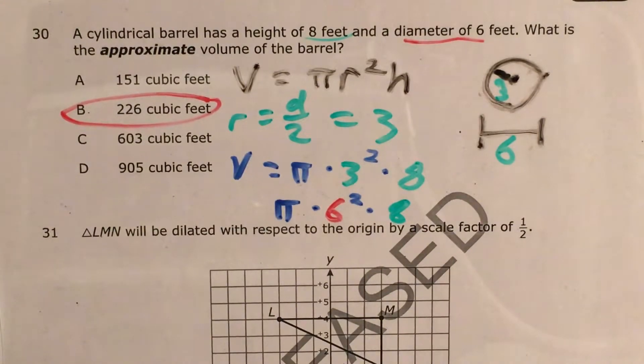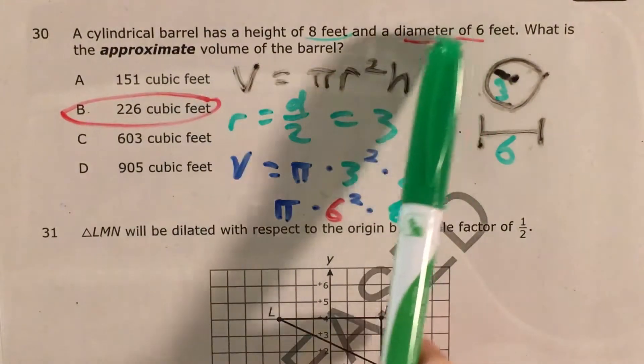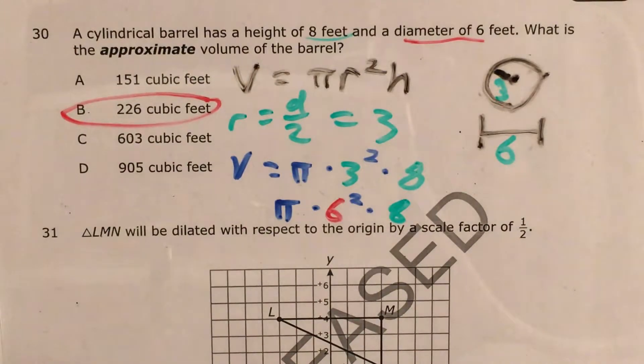Now they throw this answer in there to try to trick you because they figure some kids are just gonna rush into a problem like this and go, okay, I plug in 6, I plug in 8, pi times 6 squared times 8 gets me 905. Fantastic, I'm done, I can move on to the next one.